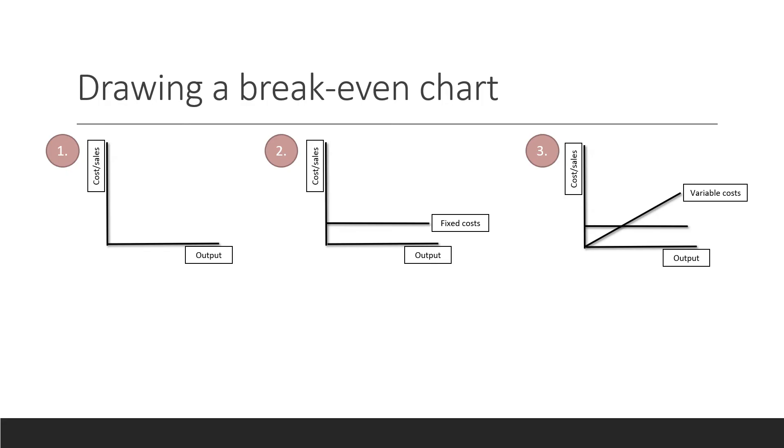Step three, you need to draw your variable cost line. So you add zero output, variable cost is going to be £0. As the output increases, the variable cost will also increase. Therefore, the variable cost line is going to slope upwards from zero.